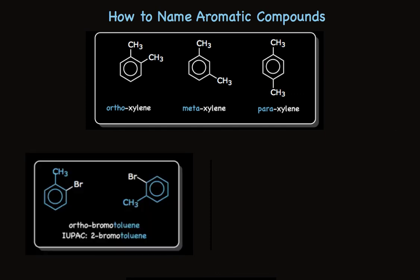Here's an example. This disubstituted compound has a methyl group attached to the benzene ring, making it a toluene. We'll name this as a toluene with one substituent. Because that substituent is on the adjacent carbon next to the methyl, we call it ortho-bromotoluene. In systematic nomenclature, we call it 2-bromotoluene. We don't need to put the 1 for the methyl group because toluene's methyl group is always carbon number 1.